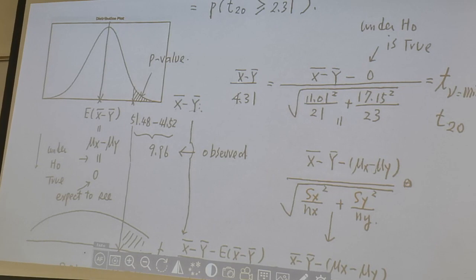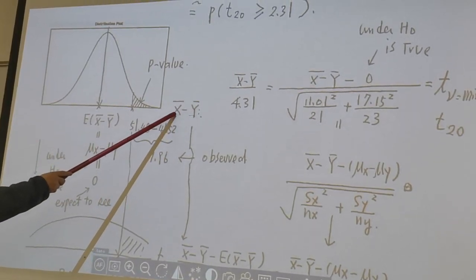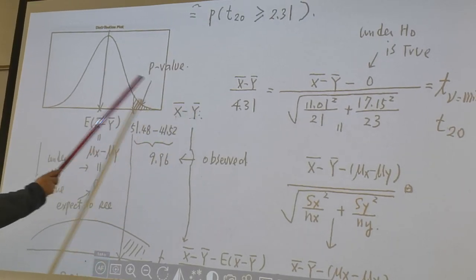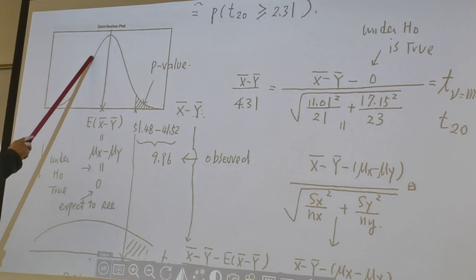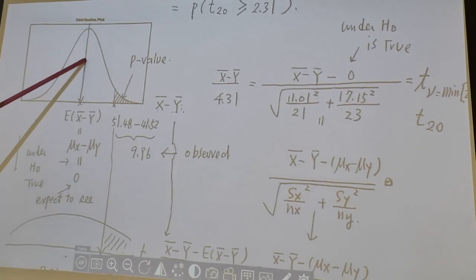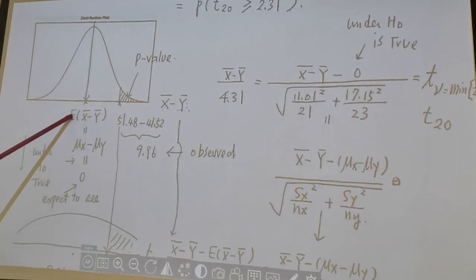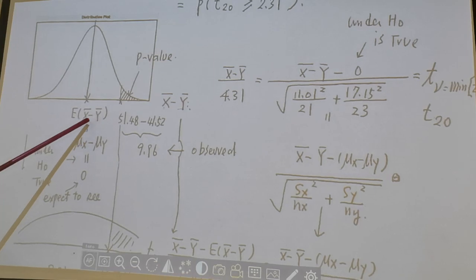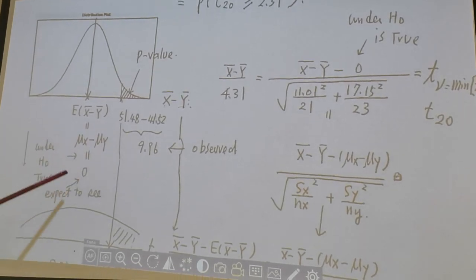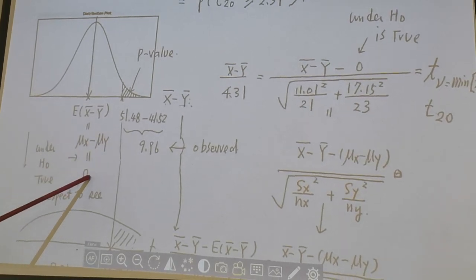So, let's look at x-bar minus y-bar. We know x-bar is normal, y-bar is normal. Normality is closed under linear combination. So, x-bar minus y-bar follows a normal distribution. And the center of the normal distribution is expected value of x-bar minus y-bar. And expected value of x-bar minus y-bar is mu x minus mu y. But under H0 is true, mu x minus mu y is zero.